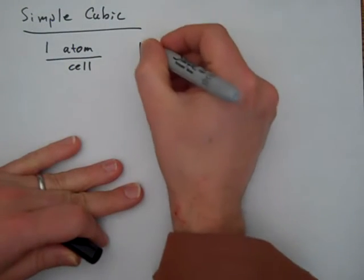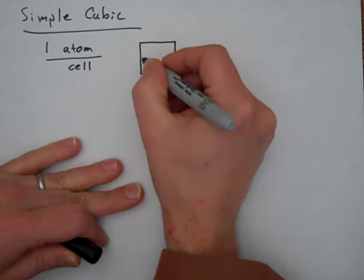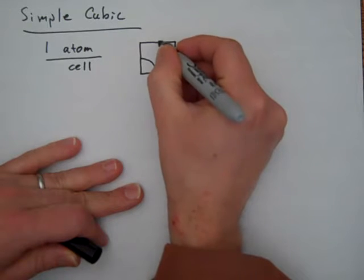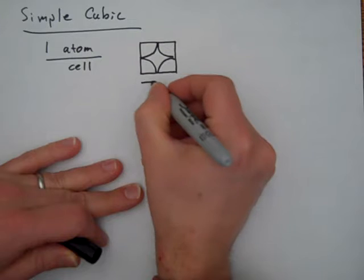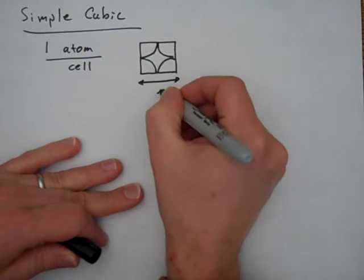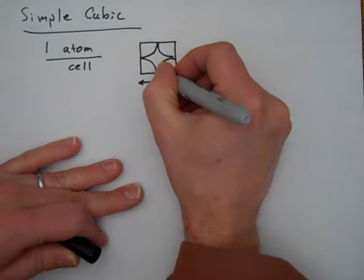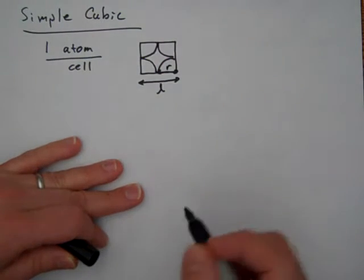So one thing we know about simple cubic is that in the simple cubic unit structure, we have one atom per unit cell. We also know, I'll just draw a face of one of these unit cells, that we have one eighth of an atom on each corner, and so that the edge length right here, length, is equal to two times the radius of one of the atoms.